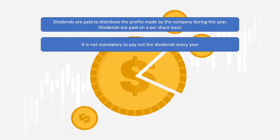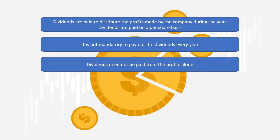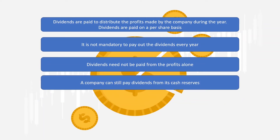It is not mandatory to pay out dividends every year. If the company feels that instead of paying dividends to the shareholders, they are better off utilizing the same cash to fund new projects for a better future, they can do so. Besides, dividends need not be paid from profits alone. If the company has made a loss during that year but holds a healthy cash reserve, the company can still pay dividends from its cash reserves.